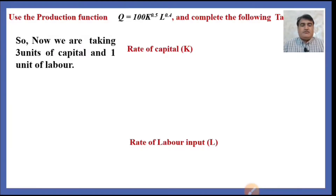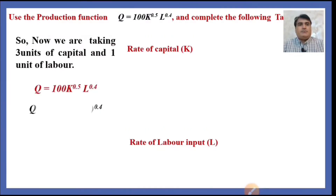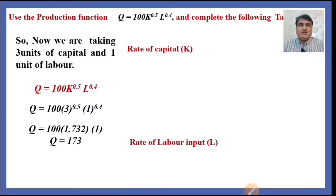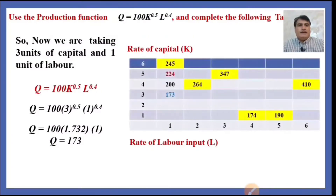Now we are taking 3 units of capital and 1 unit of labor. Using the production function Q = 100K^0.5 × L^0.4 and inserting 3 units of capital and 1 unit of labor, the result is 173. You can see 173 in the table, and likewise we continue to fill this table.